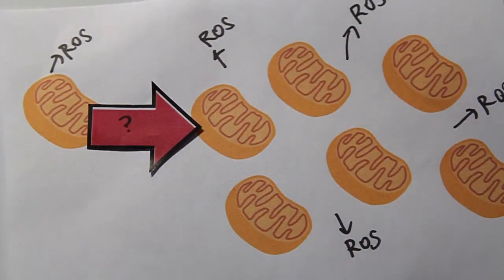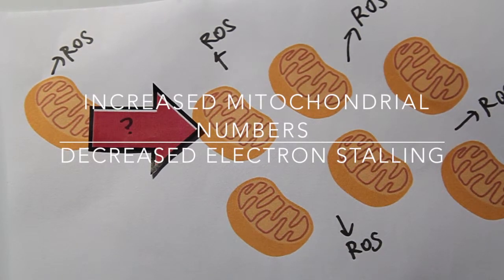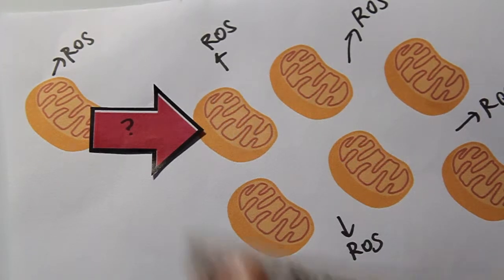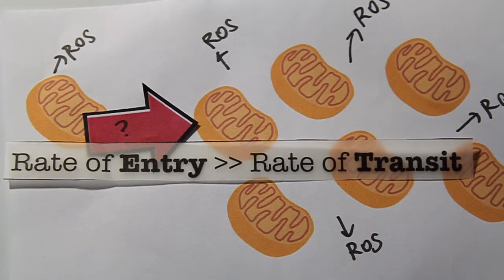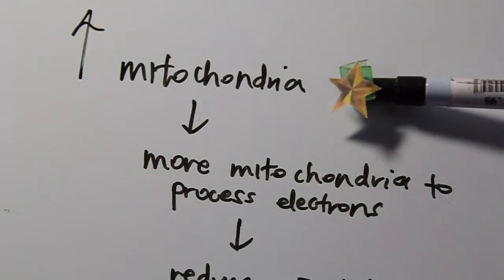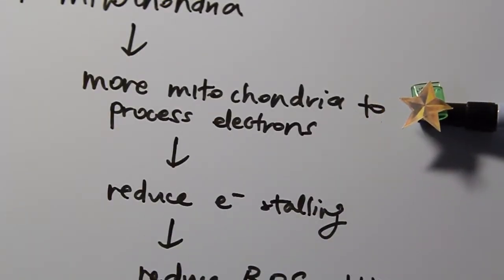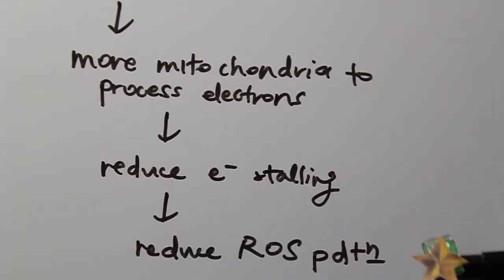One explanation is that the increase in mitochondrial proliferation decreases the number of electrons stalling in the electron transport chain. Electrons stall in the electron transport chain when their rate of entry exceeds their rate of transit. By increasing the number of low-potential mitochondria, mitochondria are able to simultaneously process a large number of electrons while maintaining lower ROS production by preventing electron stalling.